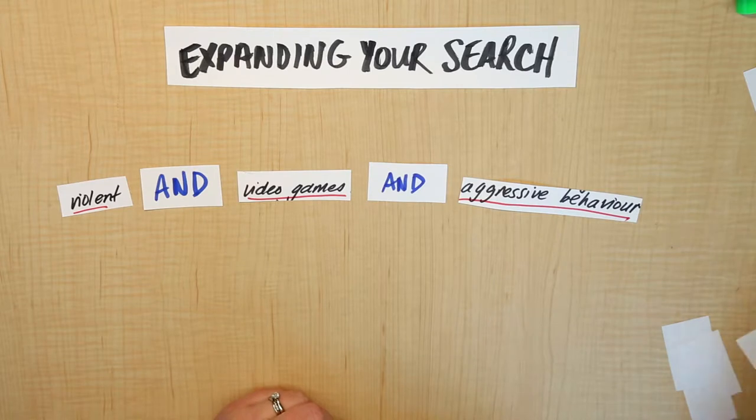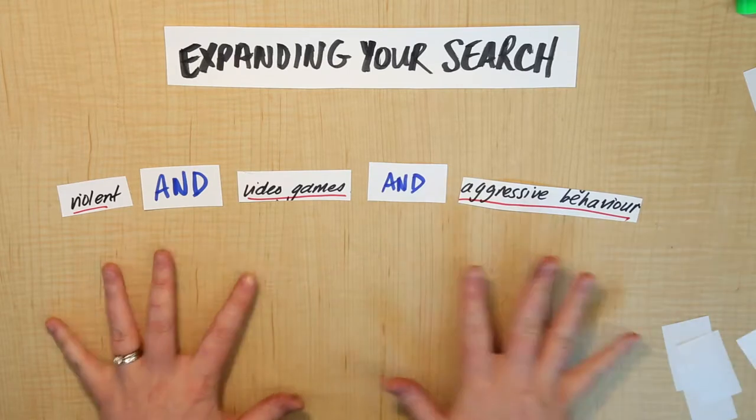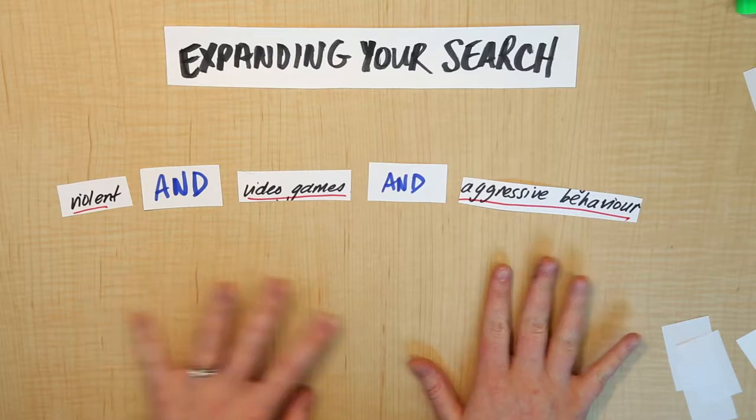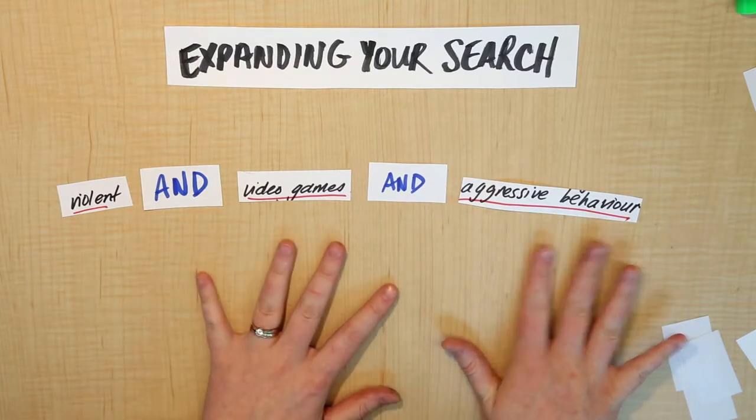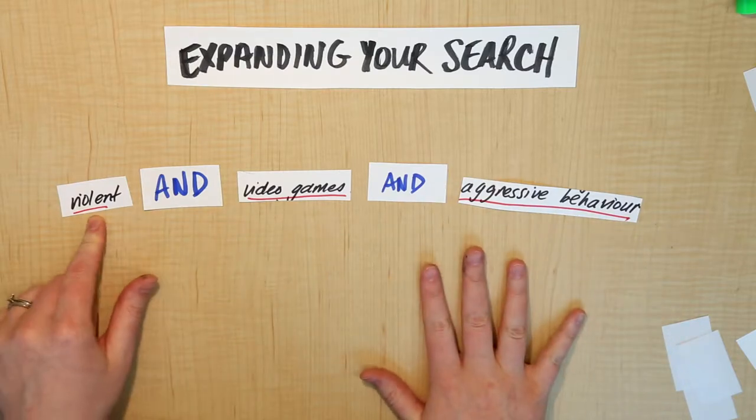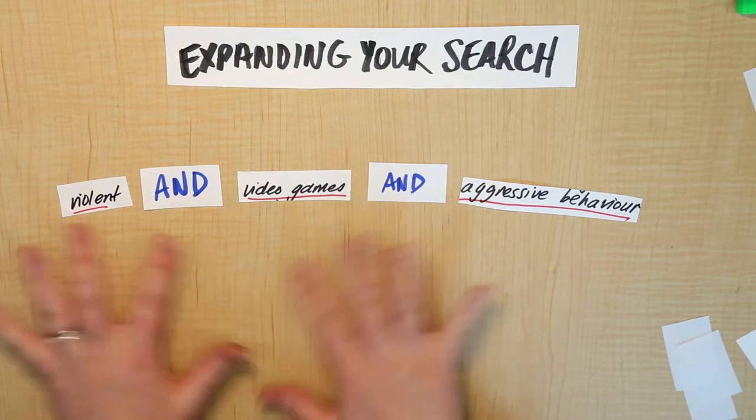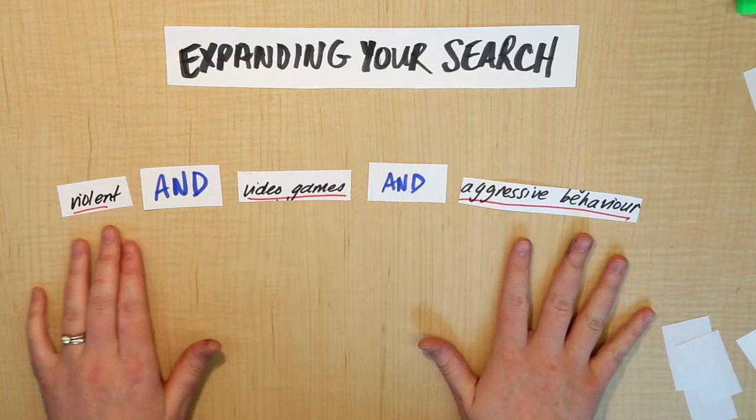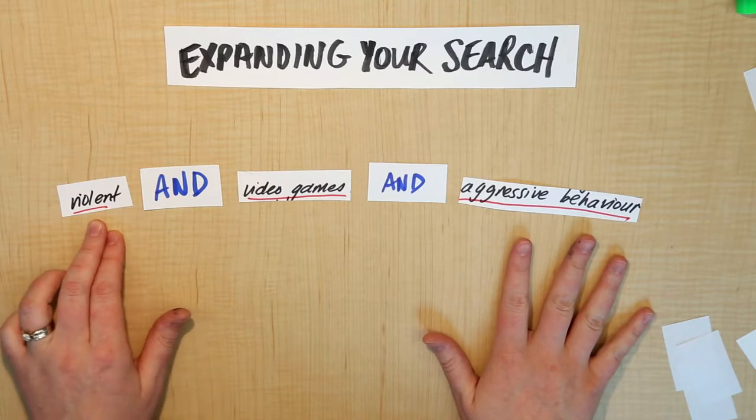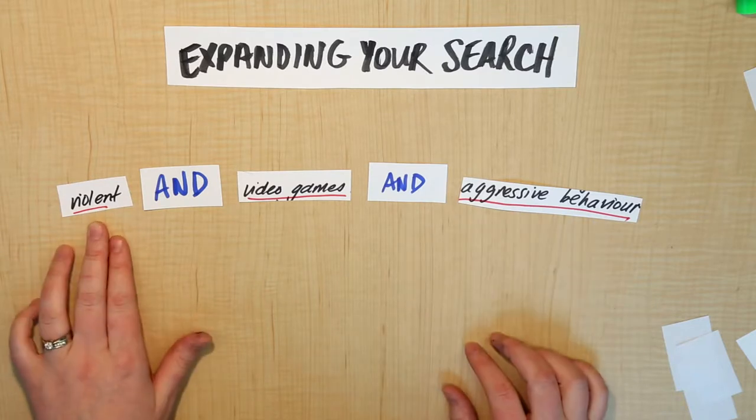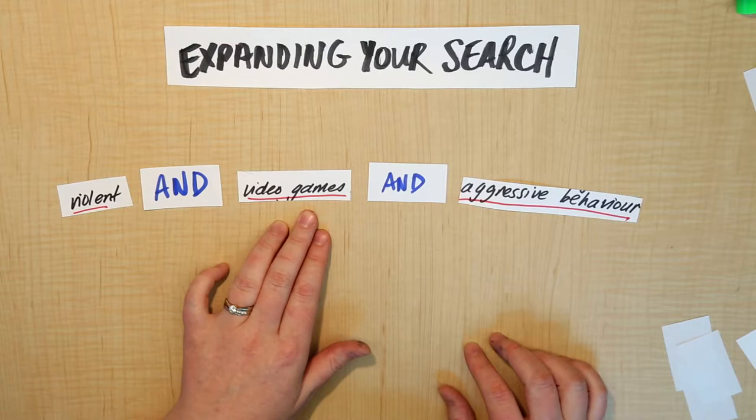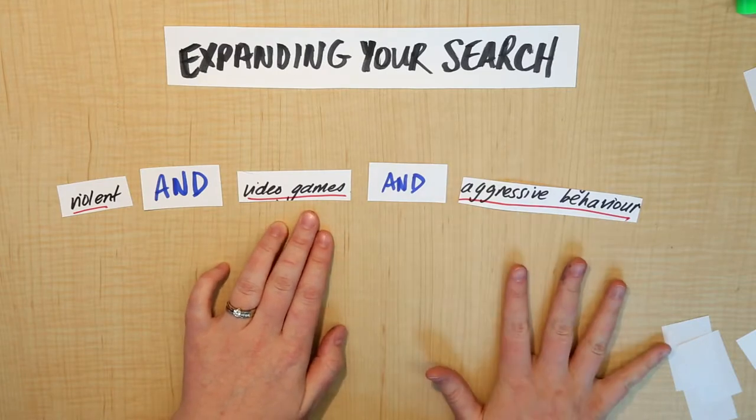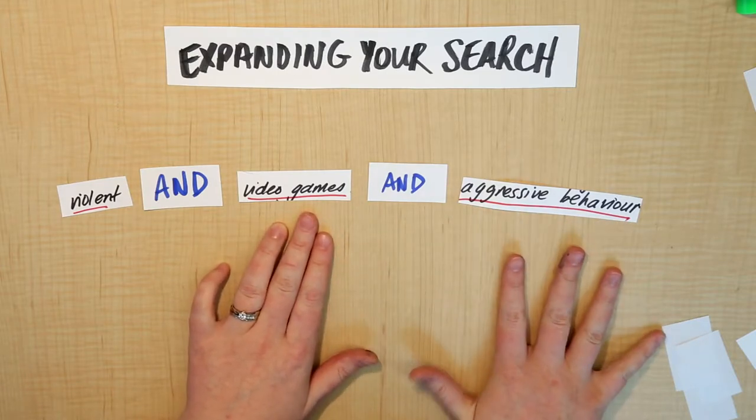If we didn't say that we wanted all three of these, then basically we would get everything that said violent even if it had nothing to do with video games or aggressive behavior. So we'd get stuff about violent crime in Vancouver which is not relevant to us. We would get everything about video games even if it had nothing to do with violence and aggressive behavior.